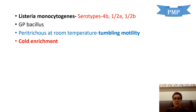Listeria monocytogenes is a gram-positive rod or bacillus, which is a unique bacterium. It is peritrichous — it forms peritrichous flagella only at room temperature, that is 25 to 28 degrees Celsius, but not at 37 degrees Celsius. So this bacterium is motile at room temperature but non-motile at 37 degrees.